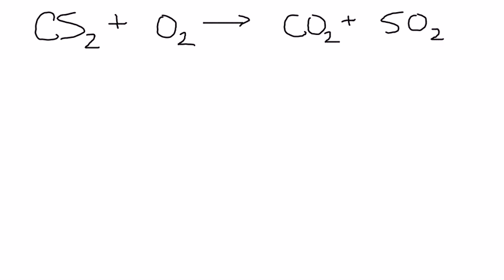First, we better balance this thing. We've got one carbon on each side — that's great. Two sulfurs and just one sulfur on the right, so we're going to have to change that to a 2. Then our oxygens: we have 2 and 4 on the right, which is 6, and on the left we only have 2, so we're going to want a 3 there. At that point, I believe we're balanced and we can continue with our problem.